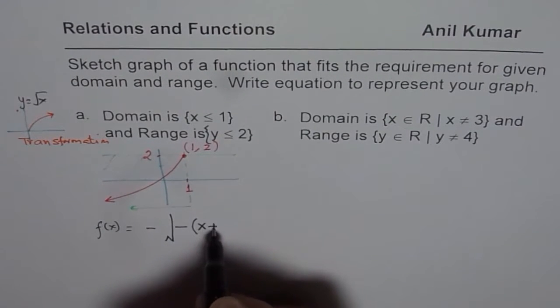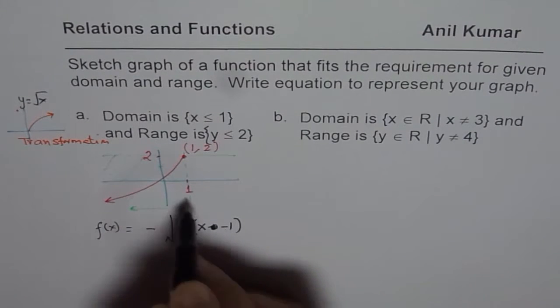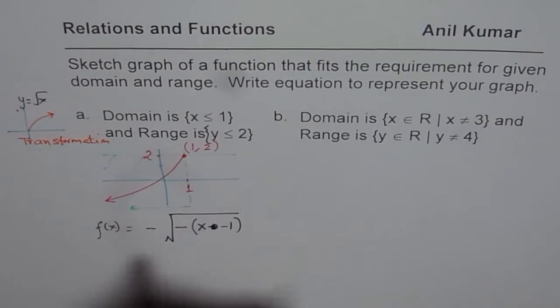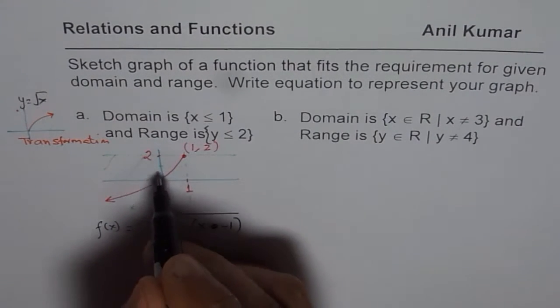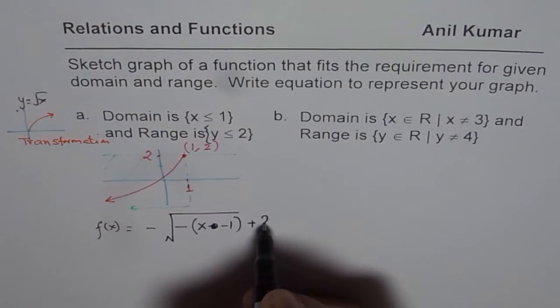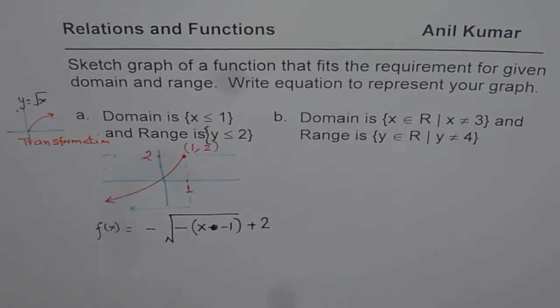x minus 1 will translate it one unit to the right. So that becomes inside the function and translating two units up means two. That is how you could actually get your function.